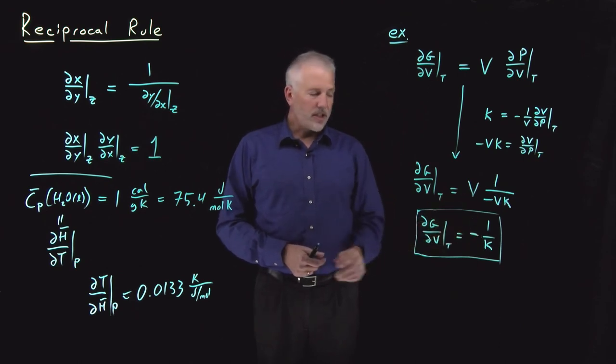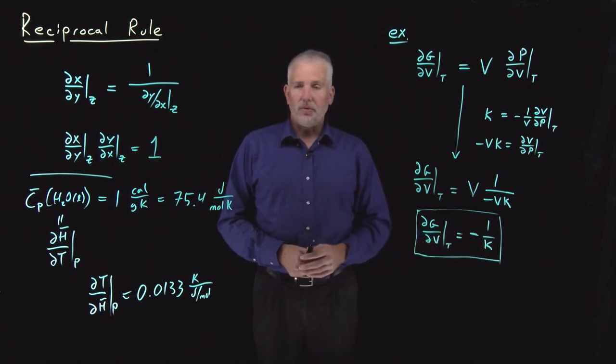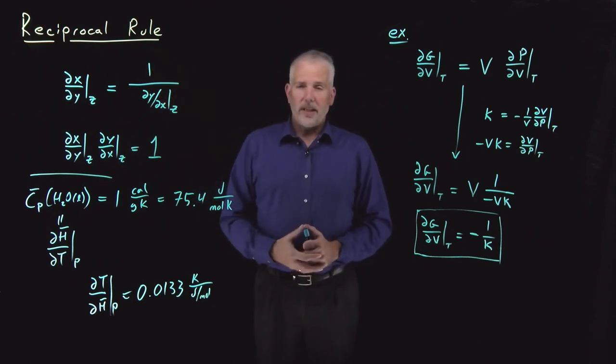That's tabulated from many materials, that's a property that's been measured, it's a named property that's been measured for many different substances. This is a useful relationship that we can actually use to learn something. There's a couple of other partial derivative identities that are equally useful, and we'll talk about those next.